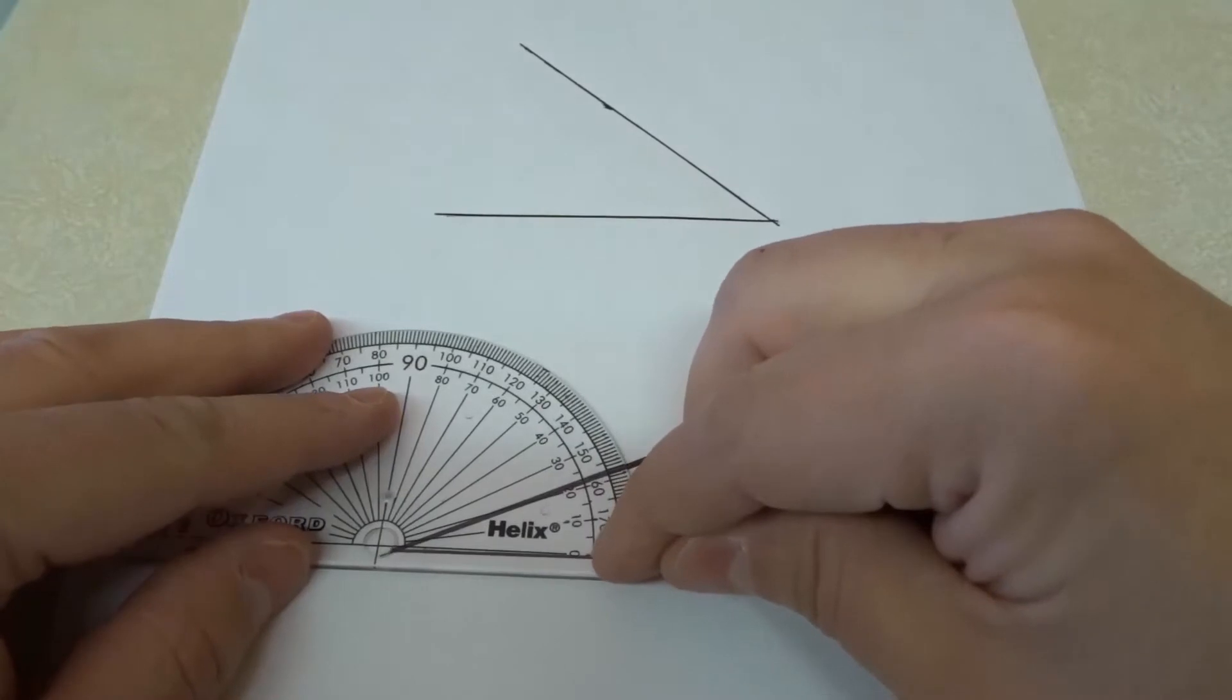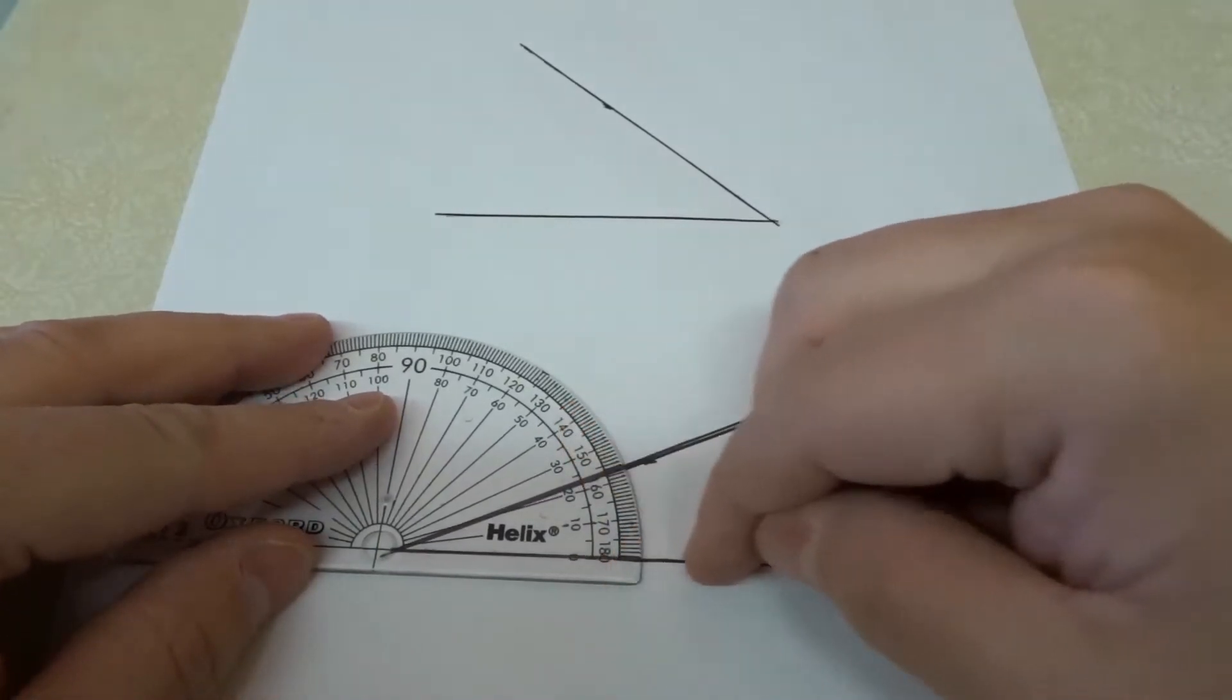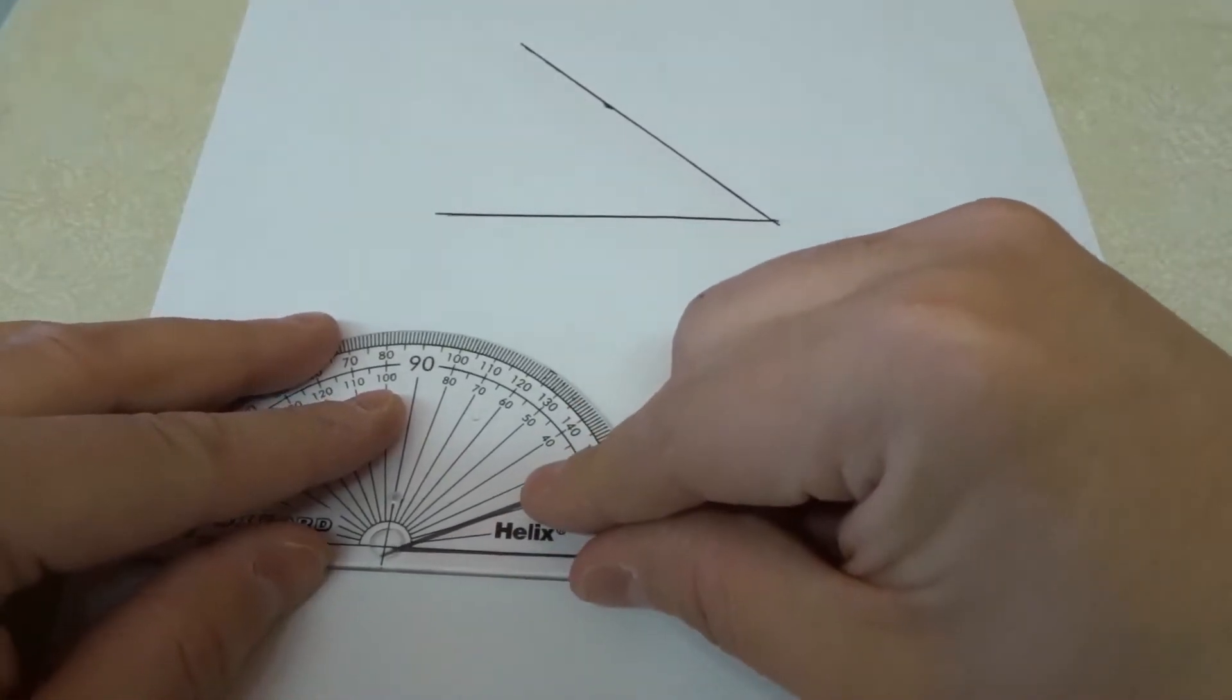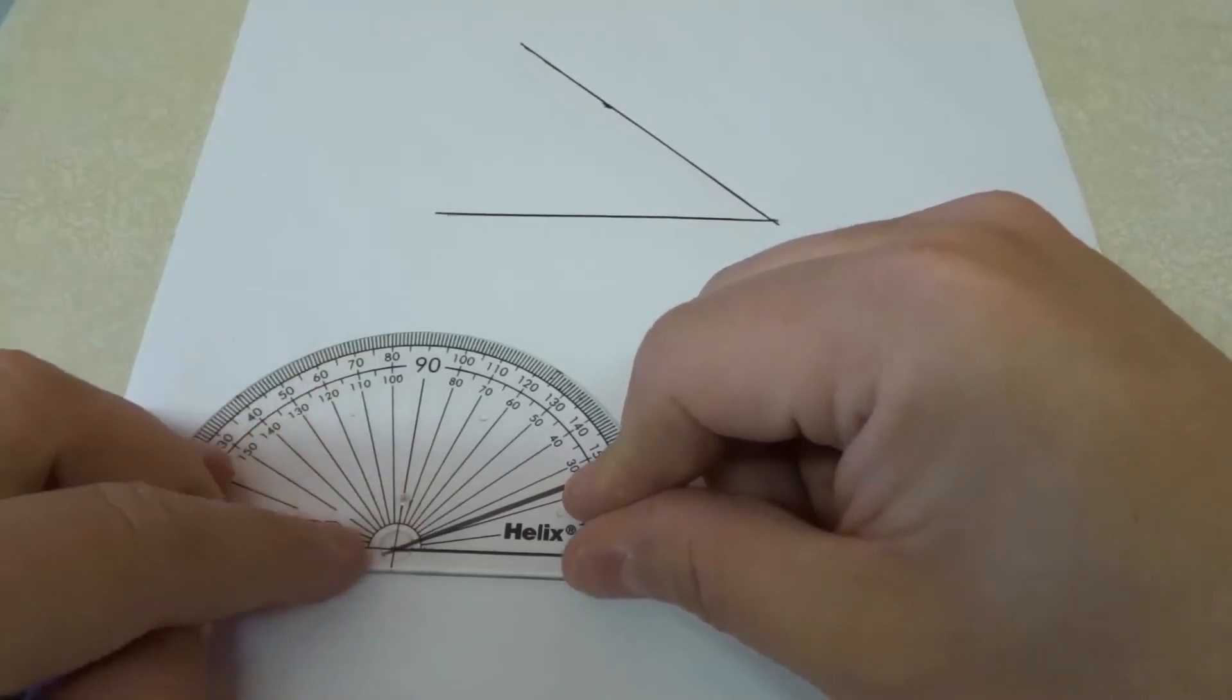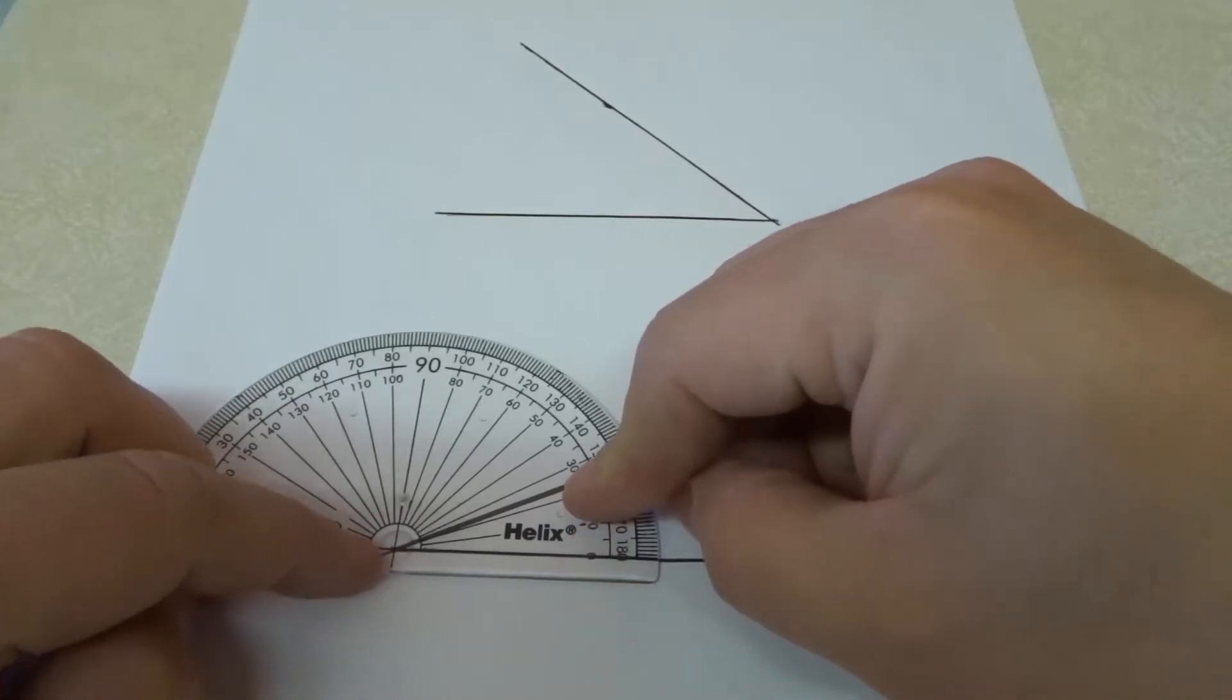I'm lining up the bottom zero line with the bottom line of the angle. And then we're going to line up the vertical line that goes right in the middle with the edge, right at the corner with the vertex of the angle.